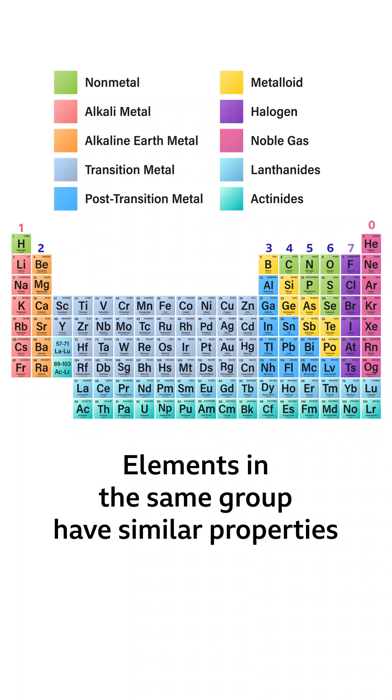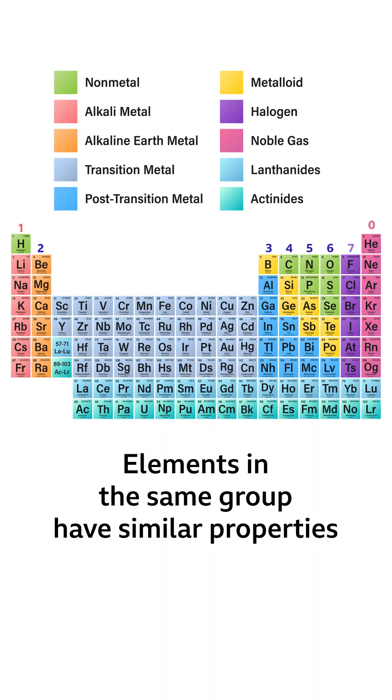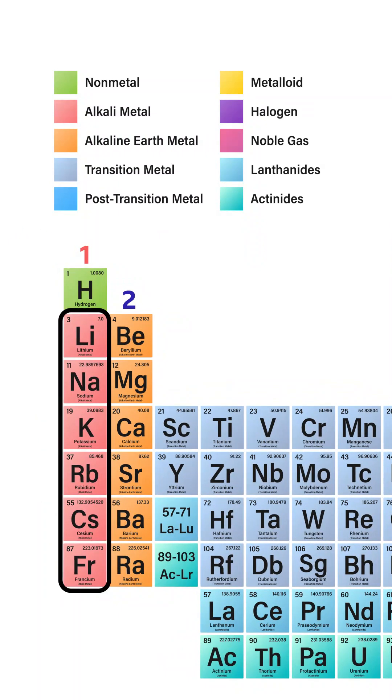Elements in the same group have similar properties. For example, in group one, that group with lithium, sodium, etc., are all called alkali metals, with relatively low melting points, and can all be cut with a knife.